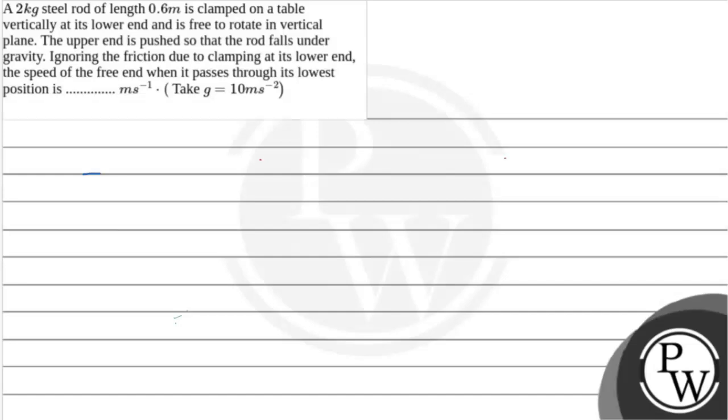Now, in our case, we have a steel rod which is hinged at its end. Let's say, here. So, height is 0.6 meter. So, it is vertically upward.